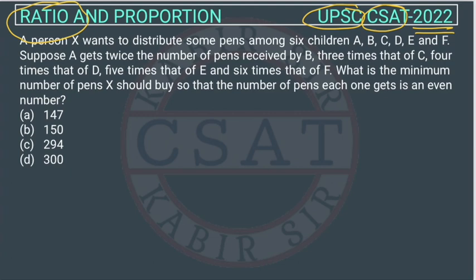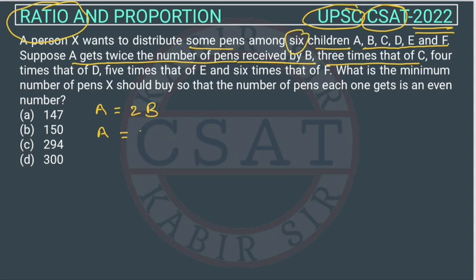A person X wants to distribute some pens among six children A, B, C, D, E, and F. Suppose A gets twice the number of pens received by B, so the number of pens with A is equal to 2B. Three times that of C, four times that of D, five times that of E, and six times that of F.